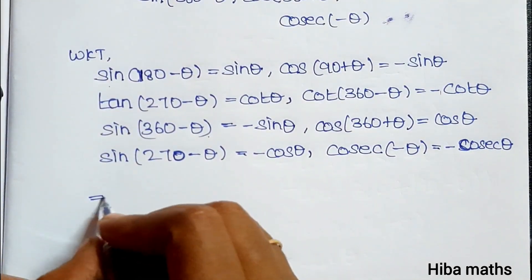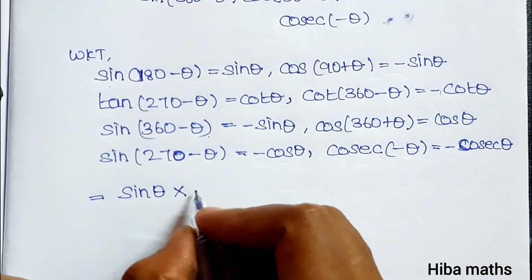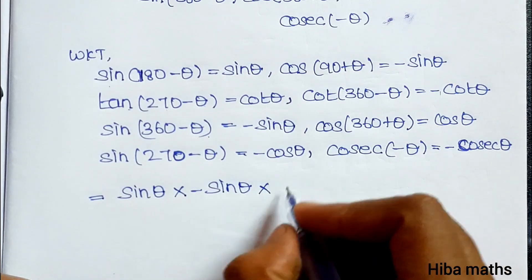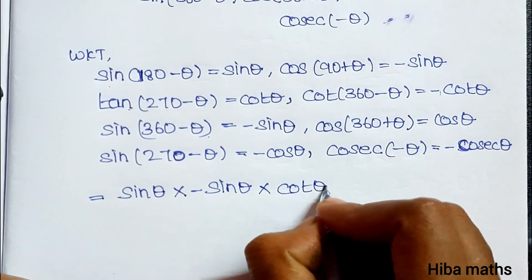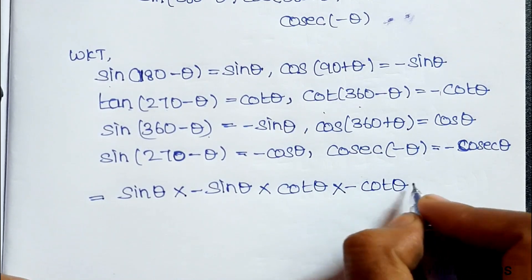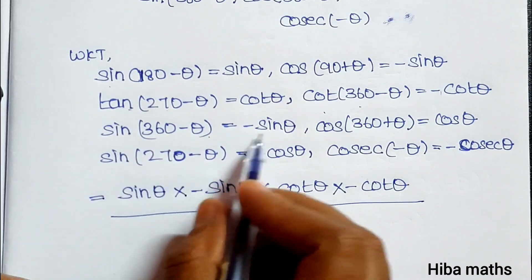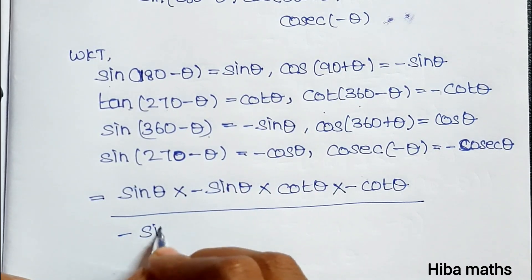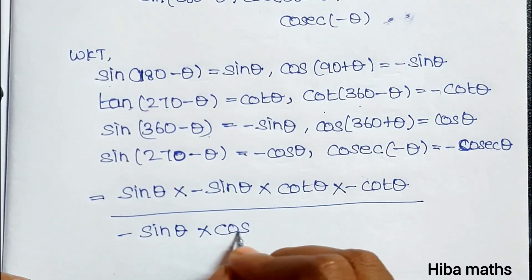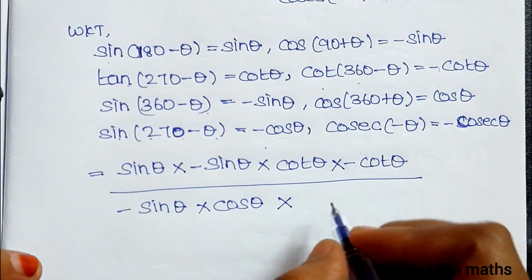So the next line: numerator becomes sin θ · (−sin θ) · cot θ · (−cos θ), divided by denominator: (−sin θ) · cos θ · (−cos θ).